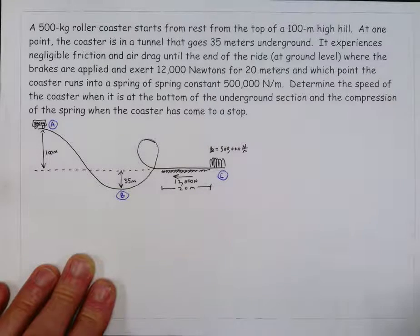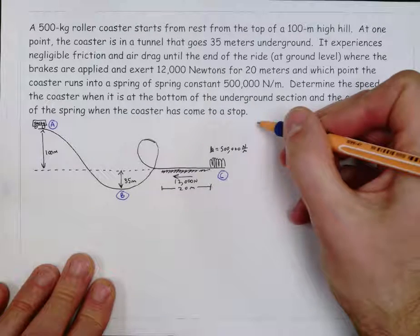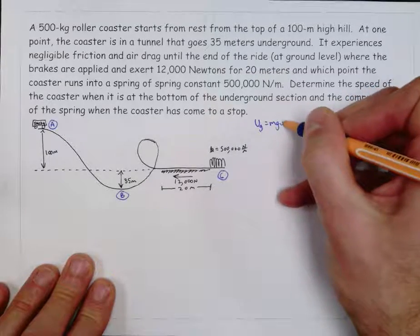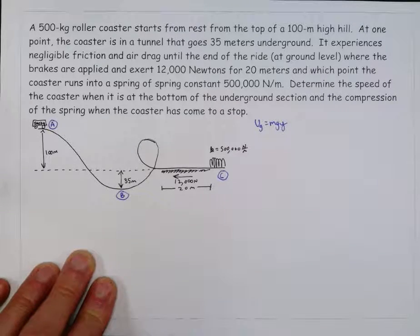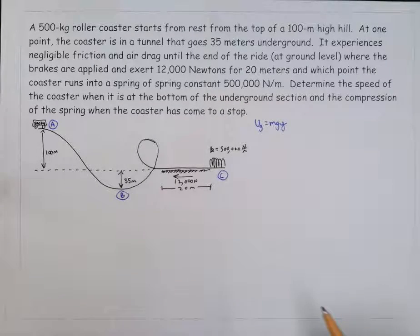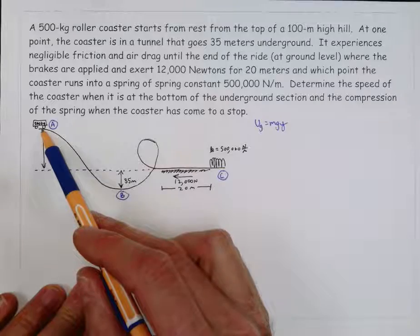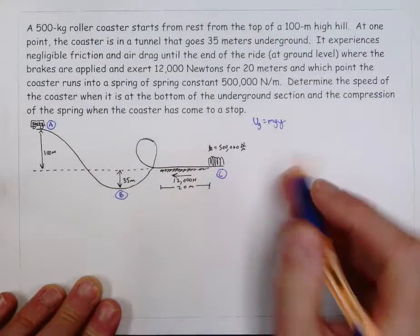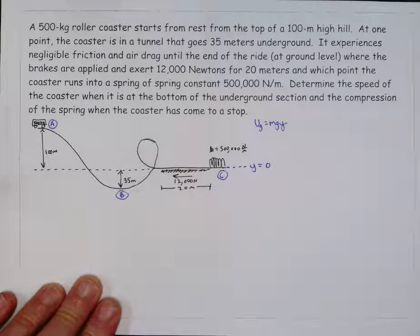The other really important thing to do at the outset of these problems is to establish where you want y to be equal to 0, and of course that's because one of our equations has y in it, and that literally stands for the y coordinate. And so you can set y equals 0 anywhere you want to, as long as you're consistent with that. Sometimes there's a location that makes your calculations simpler, or even just the diagram almost shows you where they're measuring things from, and in this diagram we have ground level here, this dotted line. They're telling us this is 100 meters above ground level, this is 35 meters below ground level, so it would make things pretty easy if we made ground level where y equals 0.